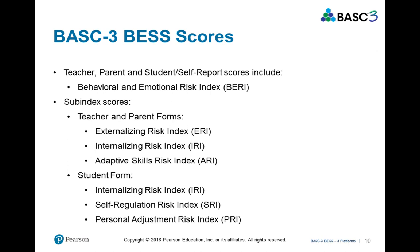The BESS provides different scores that can be used and interpreted to help provide information about students in terms of how much they are at risk for different types of emotional and behavioral issues. There's an overall behavioral and emotional risk index. On the parent and teacher forms, there's an externalizing risk index and internalizing risk index — which focuses on behaviors that are often missed in the classroom — and also an adaptive skills risk index. For the student form, there is an internalizing risk index, a self-regulation risk index, and a personal adjustment risk index.